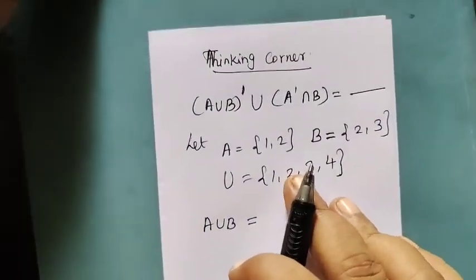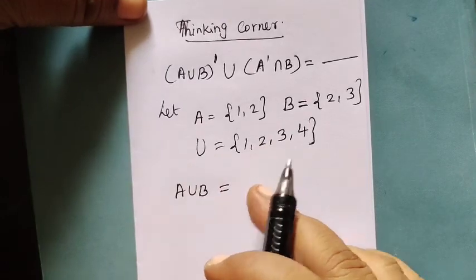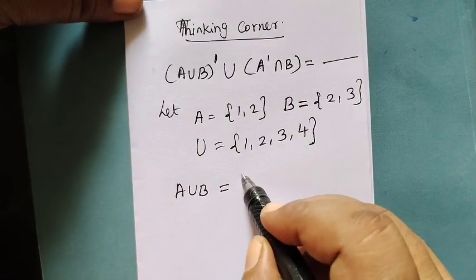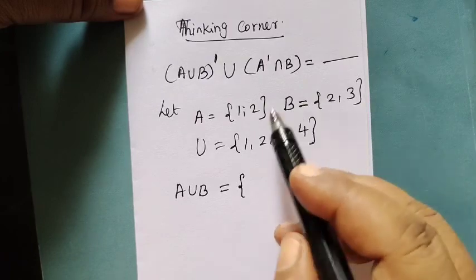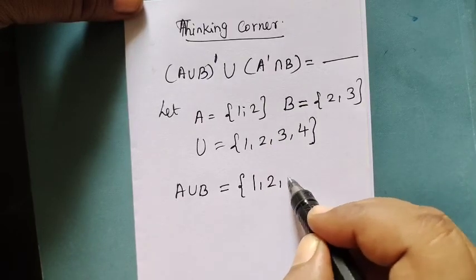A is {1,2}, then B is {2,3}, U is changed. First A union B changed. What is A union B? We changed the union, {1,2,3}.